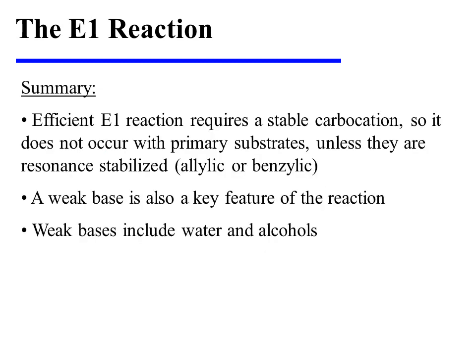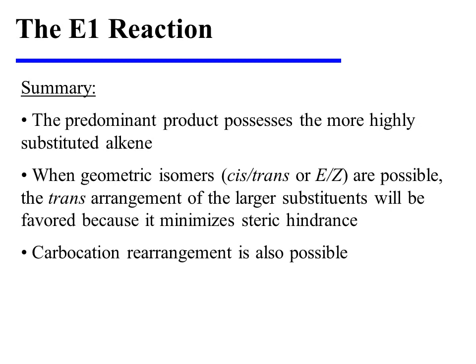In summary, efficient E1 reaction requires a stable carbocation intermediate. So E1 reaction does not typically occur with primary substrates unless they are resonance stabilized, meaning allylic or benzylic. A weak base is also a key feature of the E1 reaction, and weak bases include water and alcohols. The predominant product of E1 reaction possesses the more highly substituted alkene. When geometric isomers, for instance cis or trans, or E or Z, are possible, the trans arrangement of the larger substituents will be favored so as to minimize steric hindrance. Carbocation rearrangement is also a possibility in this reaction.